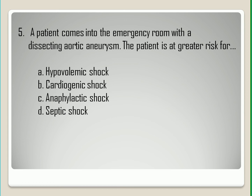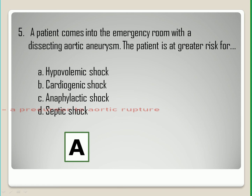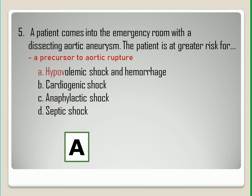Question Number Five. The correct answer is letter A. A dissecting aortic aneurysm is a precursor to aortic rupture, which leads to hemorrhage and hypovolemic shock.